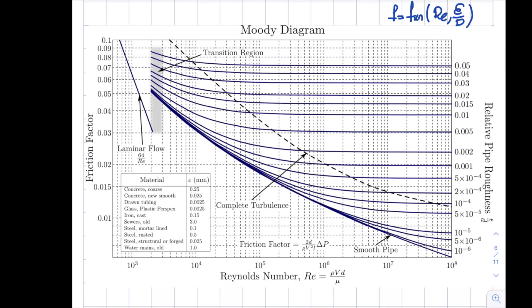So does this epsilon over D need to be in metric or British gravitational, this 5 times 10 to the minus 5? No it doesn't matter. It is non-dimensional relative pipe roughness. That's the advantage of plotting this way. Actually in this particular version of the Moody's diagram you can see they also listed your epsilon values as a function of different materials that you have. For instance iron is 0.15, drawn tubing being 0.0025.